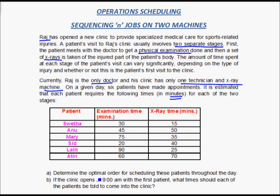We need to determine the optimal order for scheduling these patients throughout the day — basically how to schedule these six patients most optimally so that the overall time required is reduced. Second, if the clinic opens at 9 a.m., what times should each of the patients be told to come into the clinic so that they don't waste their time and the clinic doesn't keep them waiting.